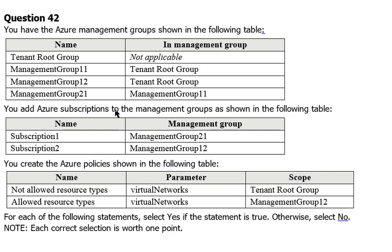You add Azure subscriptions to management groups as shown in the following table. Subscription 1 is in management group 2.1, which is part of management group 1.1. Subscription 2 is in management group 1.2.